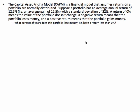Suppose a portfolio has an average annual return of 12.5%, in other words an average gain of 12.5%, with a standard deviation of 32%. A return of 0% means the value of the portfolio doesn't change. A negative return means the portfolio loses money, and a positive return means the portfolio gains money. What percent of years does this portfolio lose money, i.e. have a return less than 0%?